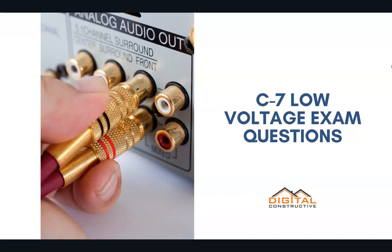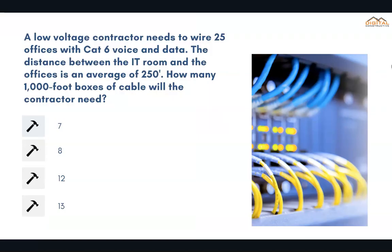Welcome to DigitalConstructive.com. In this video we're going to be taking a quick look at a few C7 low-voltage contractor license exam questions. A low-voltage contractor needs to wire 25 offices with CAT6 voice and data. The distance between the IT room and the offices is an average of 250 feet. How many 1,000-foot boxes of cable will the contractor need?